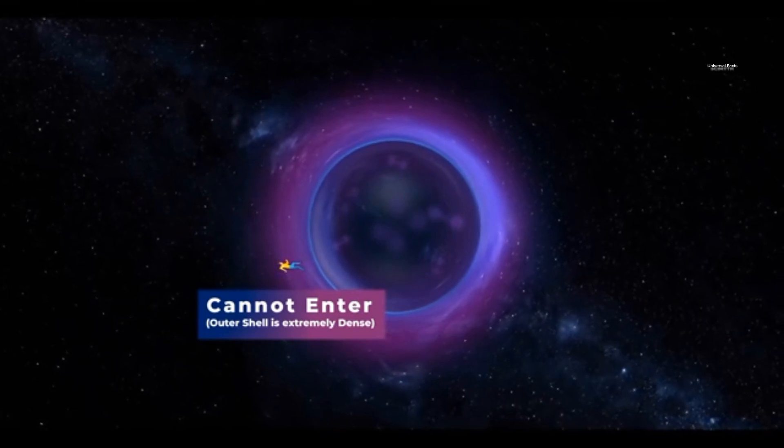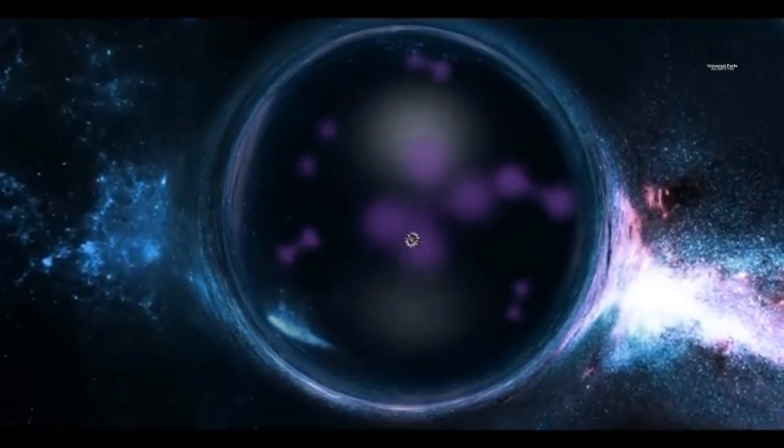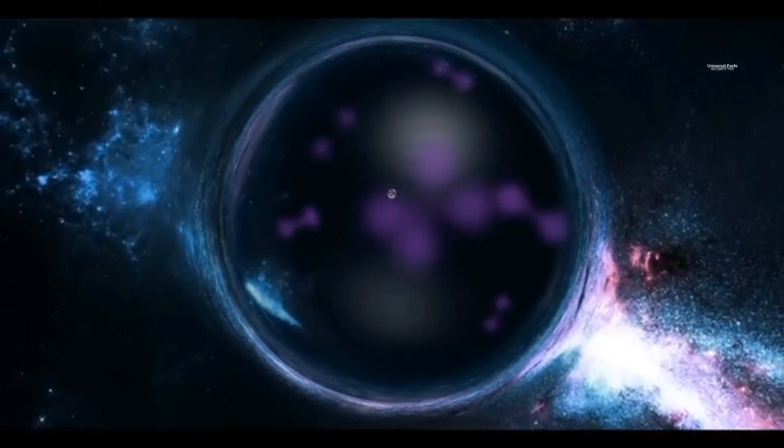The outer shell of a gravistar is incredibly dense, and the likelihood of penetrating it is almost zero. Even if the shell is somehow breached, there is no guarantee of entering the star's interior.